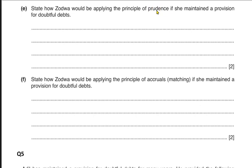Prudence means a very careful, cautious approach when making accounts. The prudence concept says two things: first, you must never overstate your profits and assets. Prudence ensures that accounts reflect the true picture of the business and we do not exaggerate the position of the business.